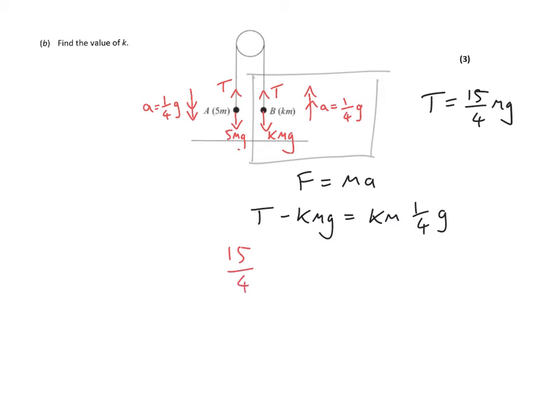Now, we're going to change T to the thing that you are given in the first part, 15 over 4 MG. Minus KMG equals KMG over 4. Now, we can divide through by MG and cancel those out.